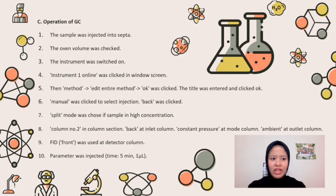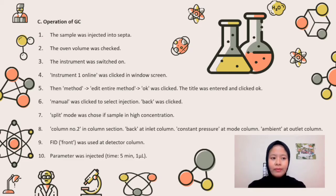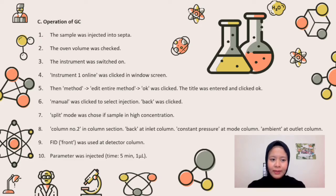Step 7: Speed mode was chosen if the sample is in high concentration; splitless mode was chosen if the sample is in low concentration. Step 8: Column number 2 was chosen in the column section. Back was chosen at inlet column. Constant pressure was chosen at mode column. Ambient was chosen at outlet column. Step 9: FID front was used as the detector. Step 10: Parameters were checked — time: 5 minutes, volume: 1 microliter.